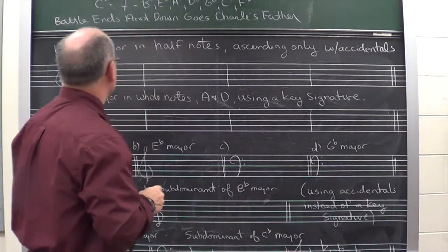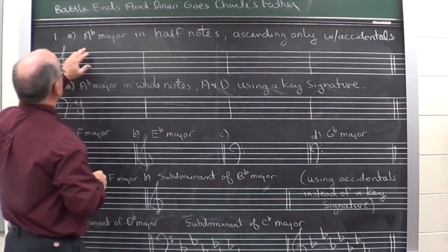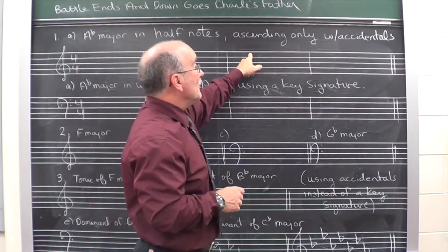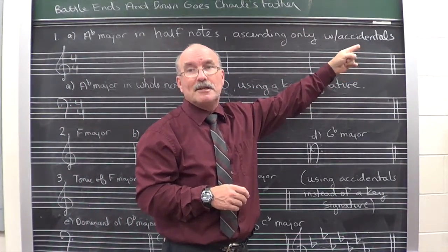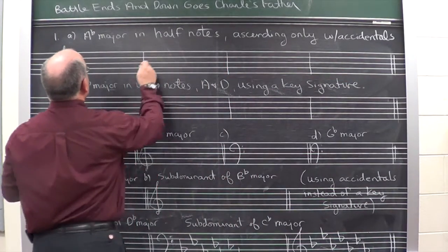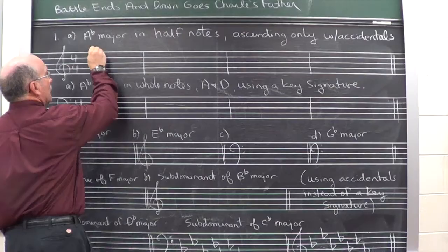So, first example. The question asks you, write the A flat major scale in half notes, ascending only, using accidentals, not the key signature. So, in order to do that, first of all, I write the notes starting on the note A flat.